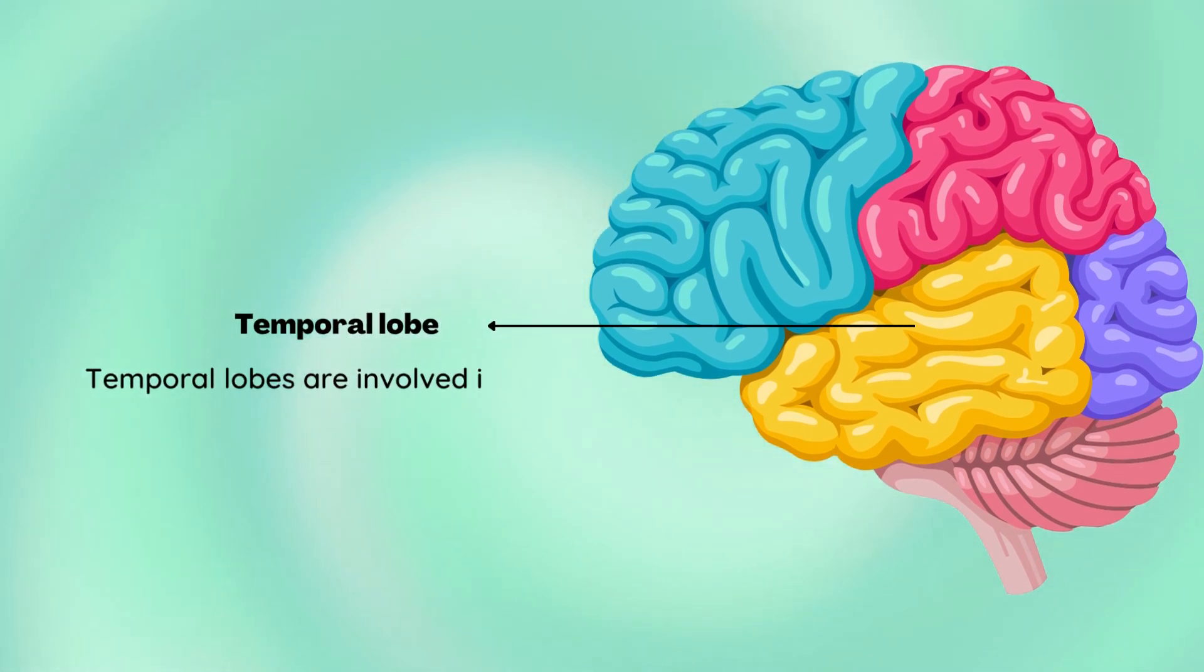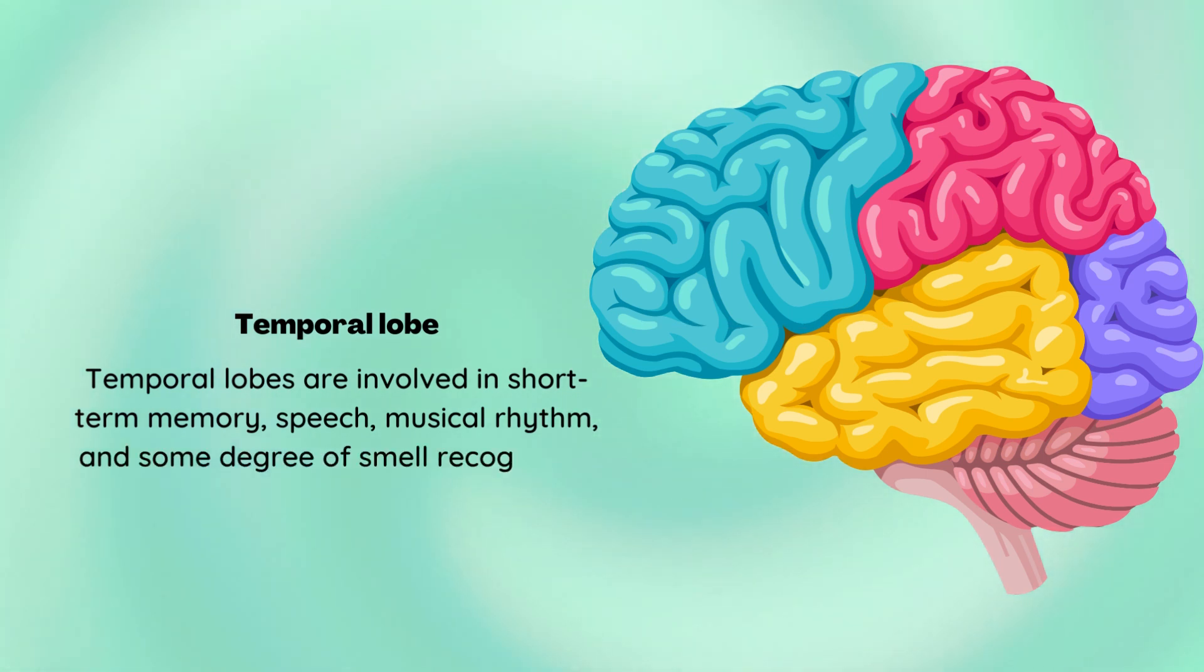Temporal lobe. Temporal lobes are involved in short-term memory, speech, musical rhythm, and some degree of smell recognition.